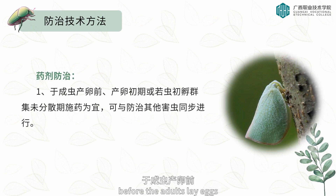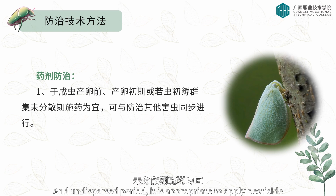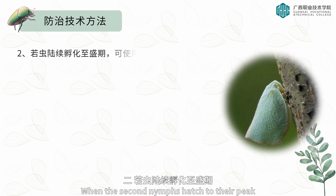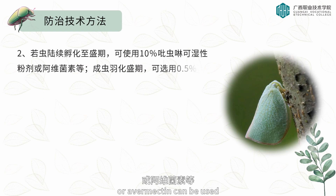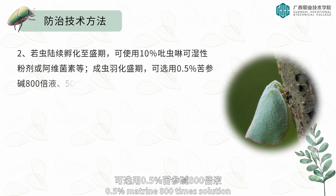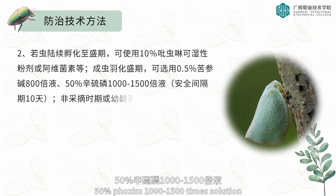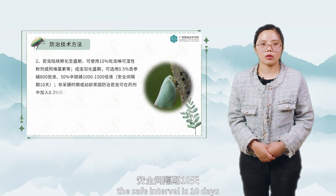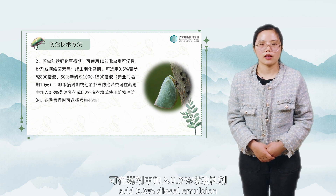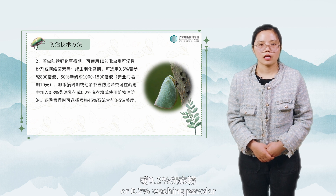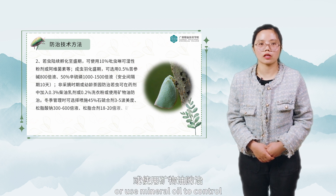Take chemical control. Before the adults lay eggs, or at the early stage of spawning, or when the nymphs are first hatched during the undispersed period, it is appropriate to apply pesticides. When the second instar nymphs hatch to their peak, 10% imidacloprid wettable powder or avermectin can be used. At the peak of adult eclosion, 0.5% matrin 800 times solution or 50% voxim 1000 to 1500 times solution can be applied. The safe interval is 10 days. During the non-picking period or in young tea gardens, to control nymphs, add 0.3% diesel emulsion, or 0.2% washing powder, or use mineral oil to control.